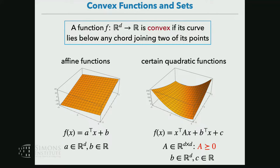Some really structured convex functions in high dimensions are affine functions — linear functions with an offset. And quadratic functions: not all quadratic functions are convex, but the ones that are look like x^T A x plus an affine function, as in Sushant's lecture. What we need for this quadratic to be convex is that the matrix A is positive semi-definite, meaning the eigenvalues of the matrix are non-negative.